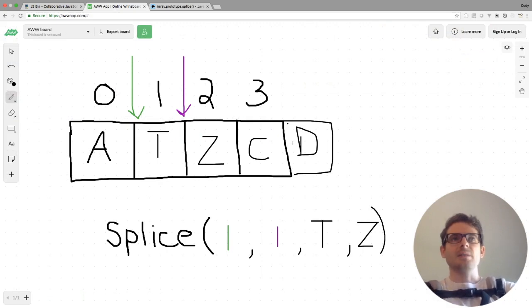Again, first argument is the starting index. Second one is the count or how many elements from that starting index you want to splice out. And then the third parameter is just an optional list of additional elements you want to push into that start index.